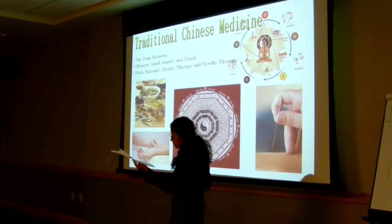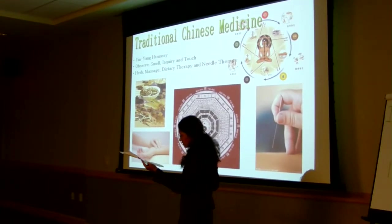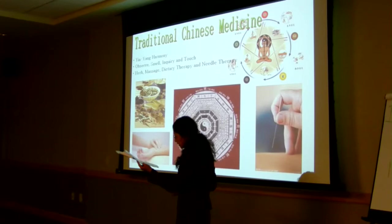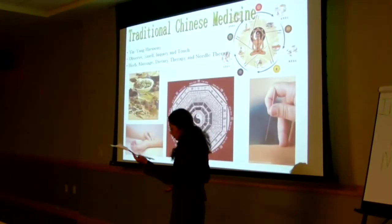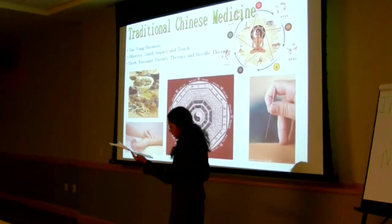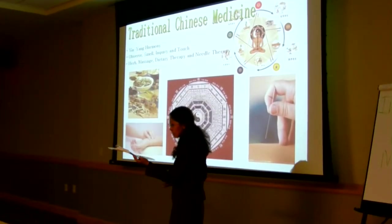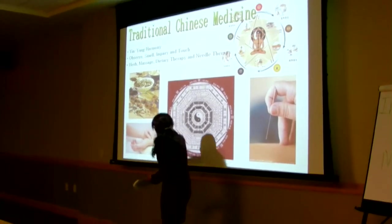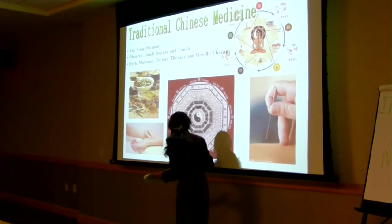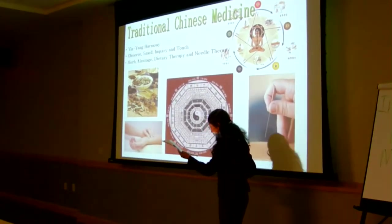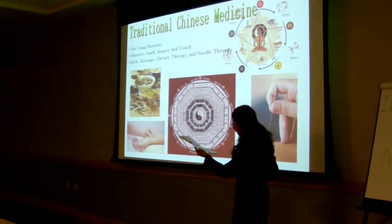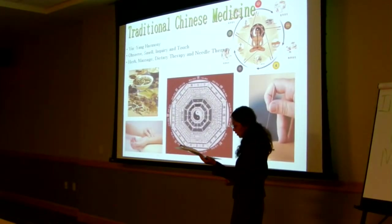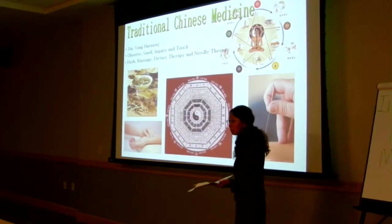Traditional medicine diagnosis consists of three simple methods to analyze this harmony pattern, mainly by touching the pulse points, like this, and inspecting. It also includes various forms of medicine.